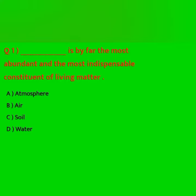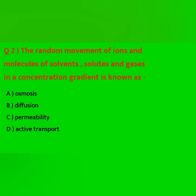Dash is by far the most abundant and the most indispensable constituent of living matter. Options: atmosphere, air, soil, water. Answer: water. The random movement of ions and molecules of solvents, solutes, and gases in a concentration gradient is known as — osmosis, diffusion, permeability, active transport. Answer: diffusion.